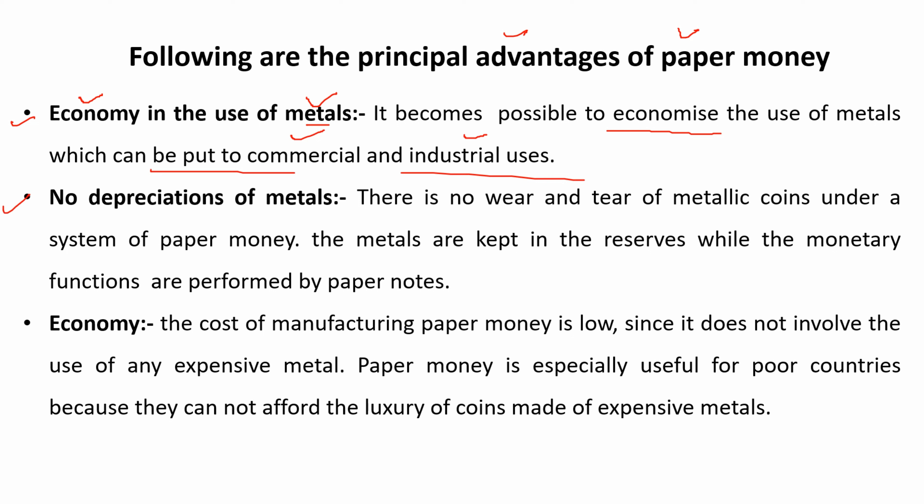The next point is no depreciation of metals. When metals were used as currency, if you used them daily there would be depreciation — wear and tear — and the value would be reduced. So when paper notes came, there was no such wear and tear. This became an advantage. There is no wear and tear of metallic coins under a system of paper money.